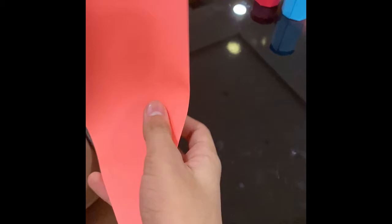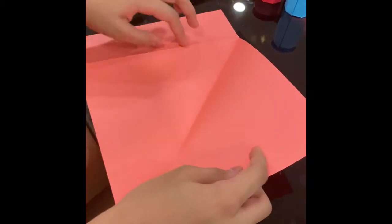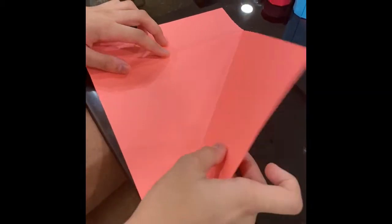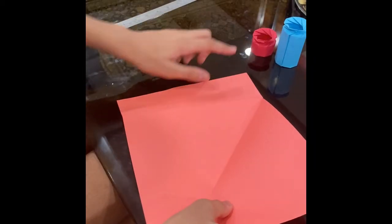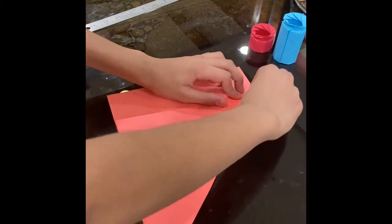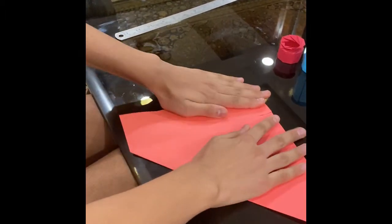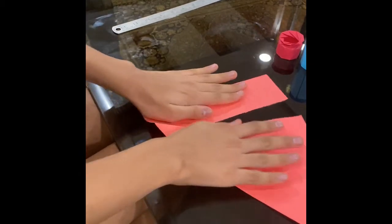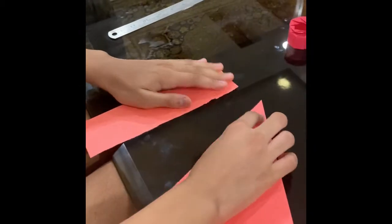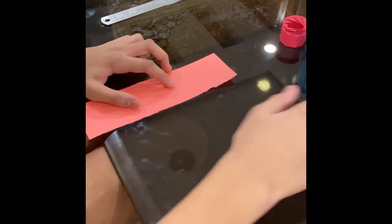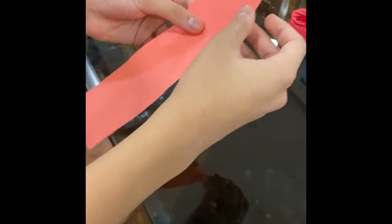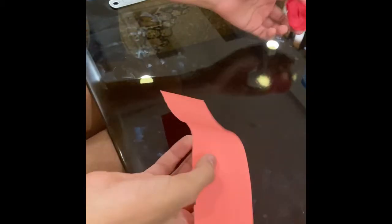So now what most people do is they take out the square and they either throw this or they use it in something else. Now with this paper we are going to be making the jar. We don't need a lot of big paper, so I'll just be tearing out the square which I can use for later.